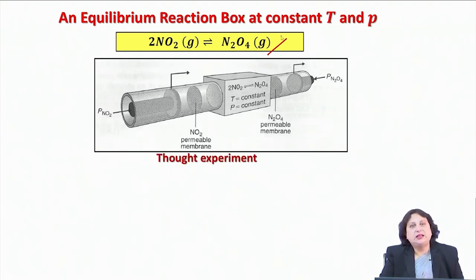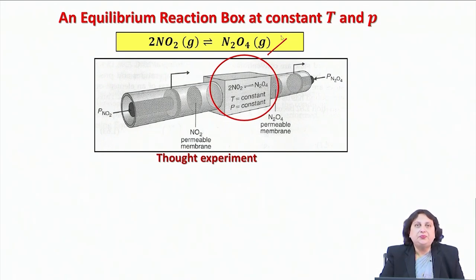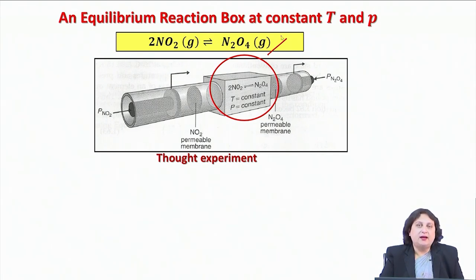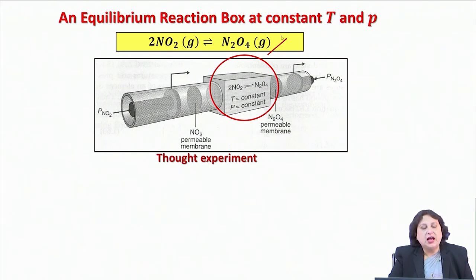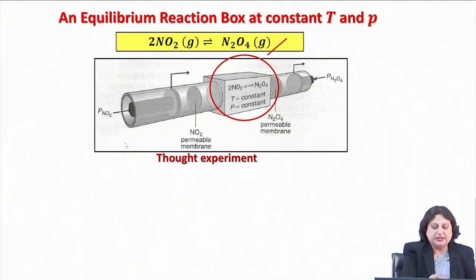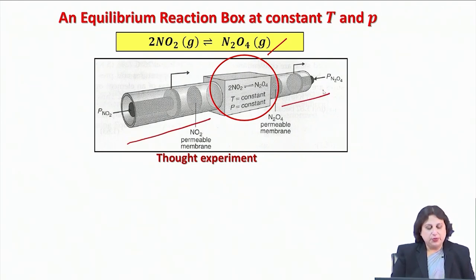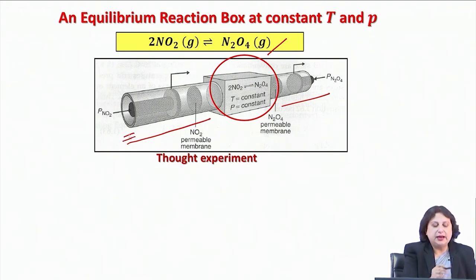This is a schematic representation of the reaction setup that we have. Here in this picture, I will highlight what I call as my equilibrium reaction box. In this box, I have a chemical reaction equilibrium between NO2 and N2O4, being maintained at a constant temperature T and pressure P. With this reaction box, I have two more attachments — I am going to call one part the NO2 side and the other part the N2O4 side.